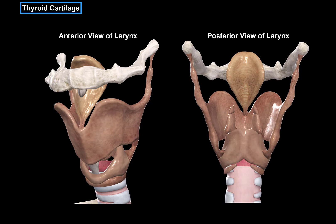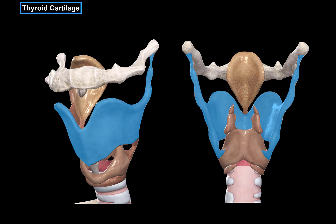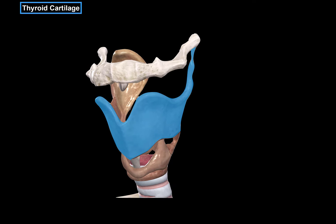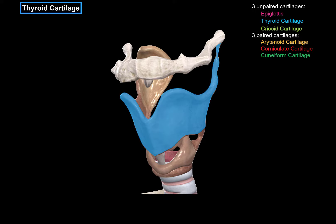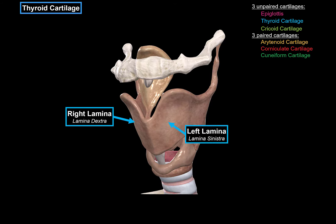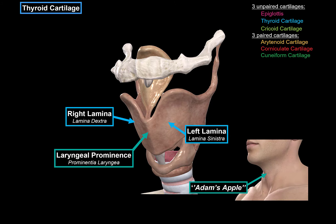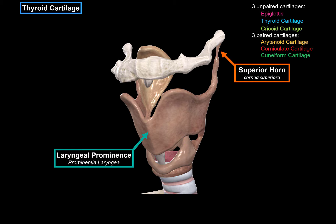Here's an anterior view and a posterior view of the larynx. The thyroid cartilage is highlighted here in blue. The thyroid cartilage is mainly made up of two plates, or two laminas — a right lamina and a left lamina. These two meet in the middle and form the laryngeal prominence, which is also known as the Adam's apple. There are two processes on the thyroid cartilage: one going straight up towards the hyoid bone, called the superior horn, and a process going down towards the cricoid cartilage, called the inferior horn.